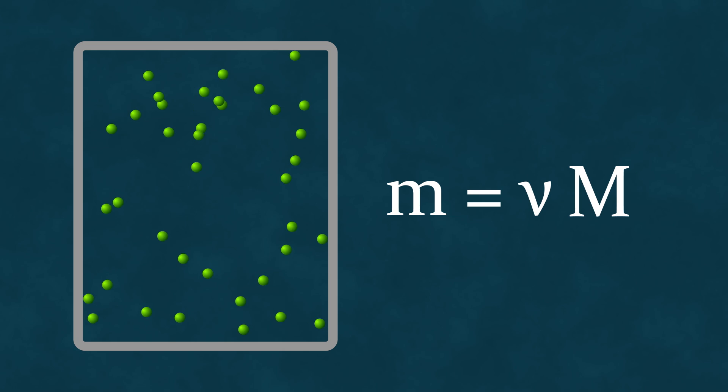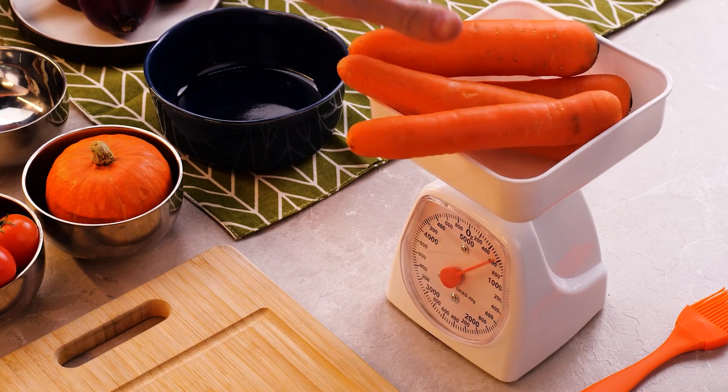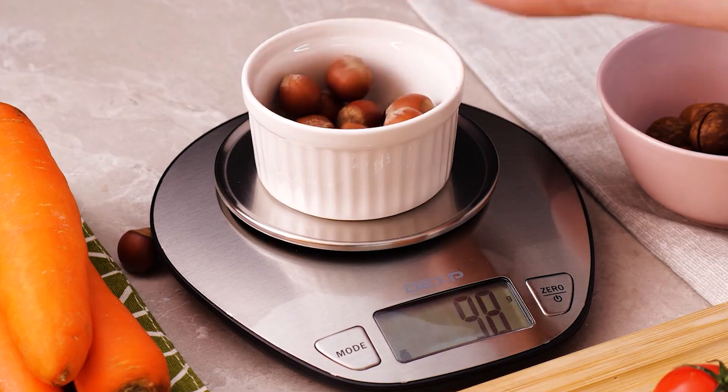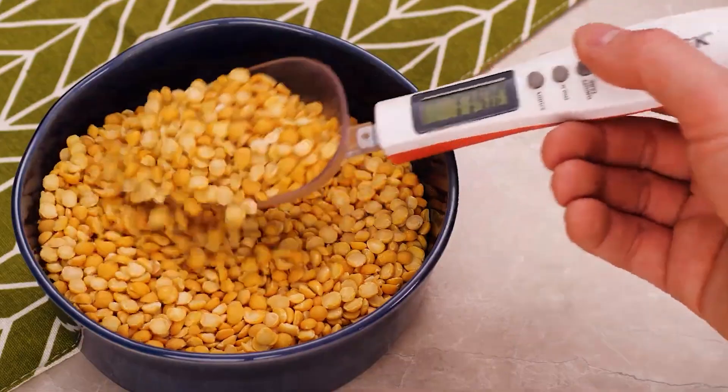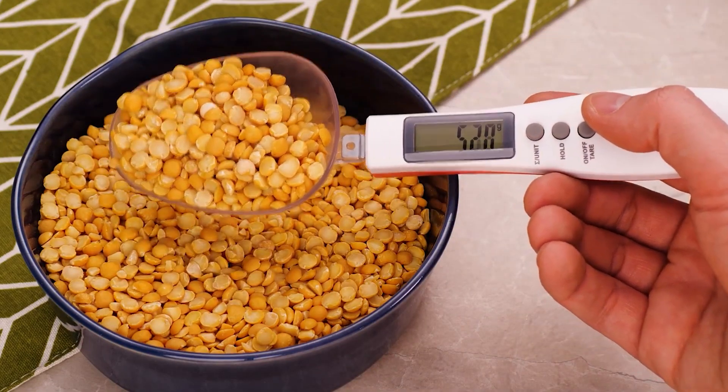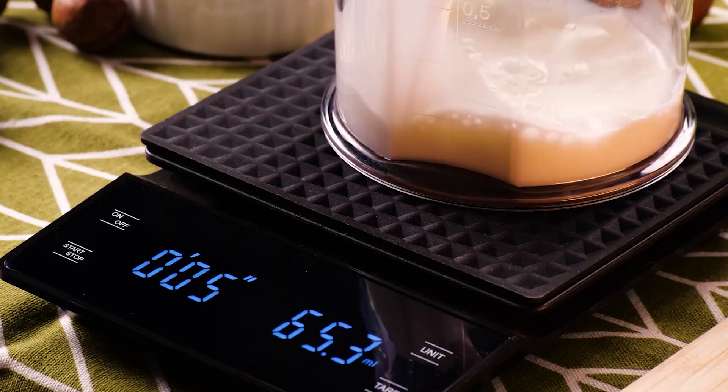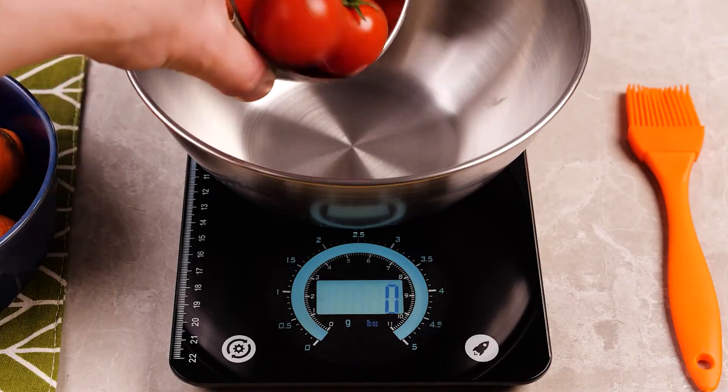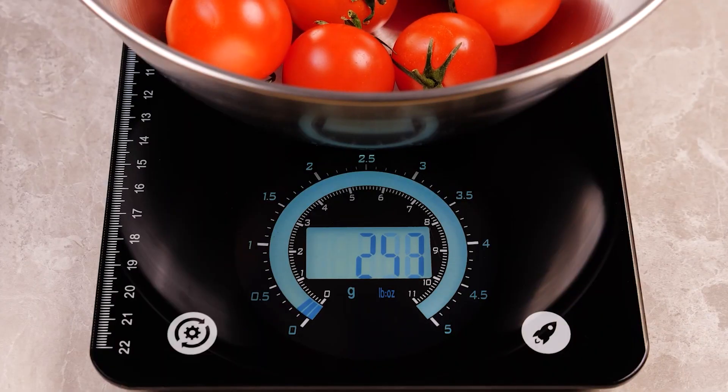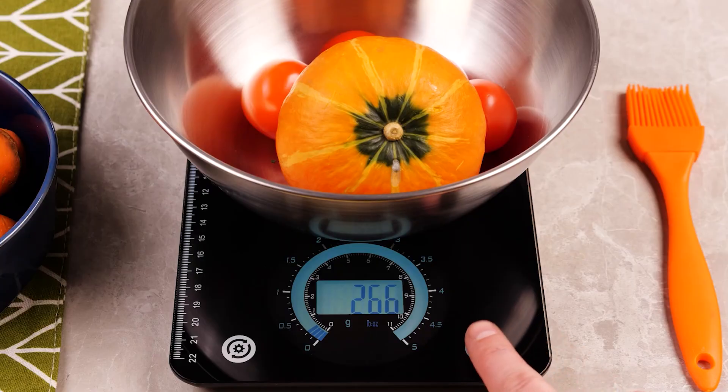Therefore, in classical physics, there is indeed a direct and unambiguous relationship between mass and the amount of substance. Since mass is technically easier to measure than counting molecules, using mass as a characteristic of the amount of substance has become a widespread practice. But what exactly is mass from the perspective of physics?